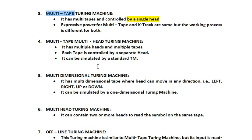The fourth variant is the Multi-Tape Multi-Head Turing Machine. Unlike the previous one with a single head, here multiple heads control multiple tapes. With multi-heads and multi-tapes, processing happens in parallel, making it the most convenient to use. However, cost is higher compared to single-way or two-way infinite tape machines. If speed is critical and cost is not a constraint, a multi-tape multi-head Turing machine is the best choice. It can also be simulated by a standard Turing machine.